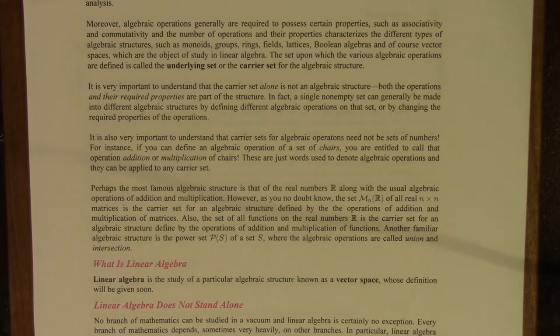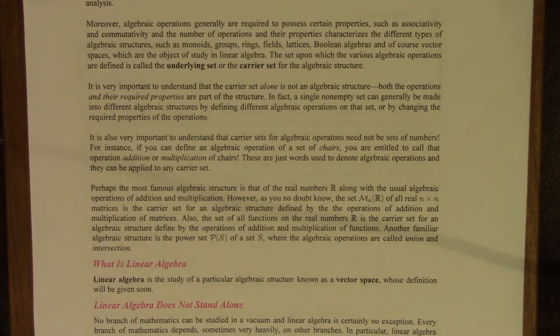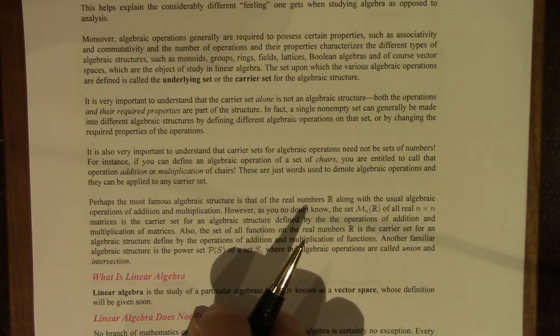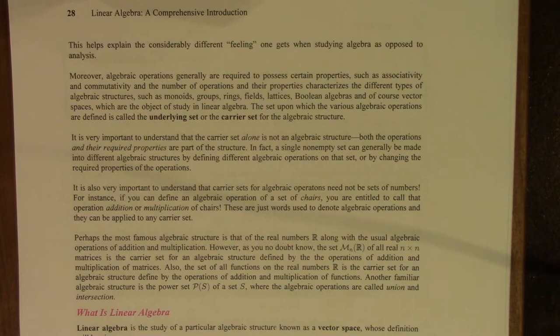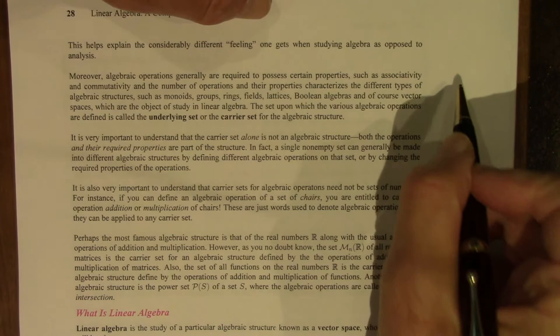The number of operations and their required properties characterize the different types of algebraic structures, such as monoids, groups, rings, fields, lattices, Boolean algebras, and of course vector spaces. The set upon which these various operations are defined is called the underlying set or the carrier set for the algebraic structure. It's very important to understand that the carrier set alone is not an algebraic structure — you need the set, the operations, and their properties. So there are three parts to an algebraic structure.